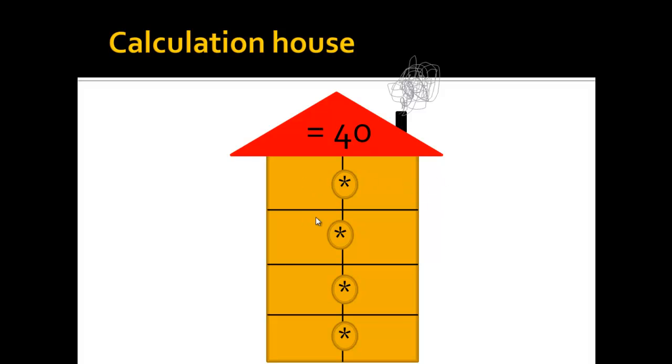You will always have to find two numbers for each level that when multiplied give you the result 40. For example, 1 times 40 is 40, or 2 times 20 is 40. You can choose any numbers you wish and put them in the levels, as long as when multiplied they give the result in the roof.